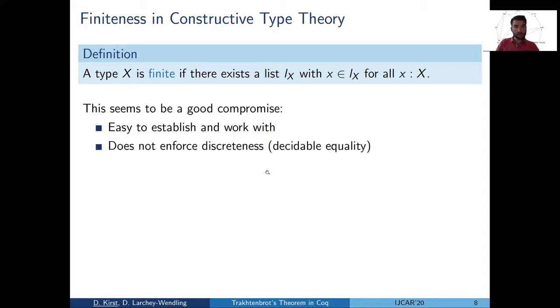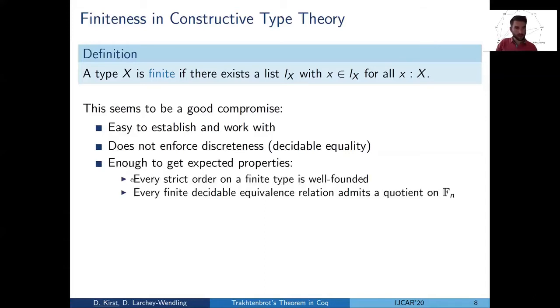On the other hand, this definition is pretty relaxed. In particular, it doesn't enforce discreteness. So a finite type doesn't necessarily need to have decidable equality. And this means that establishing finiteness is a bit simpler. But finiteness is still strong enough to give us some expected properties. In particular, that strict orders on finite types are well-founded. And then for finite and decidable equivalence relations, we can always quotient onto some finite type.